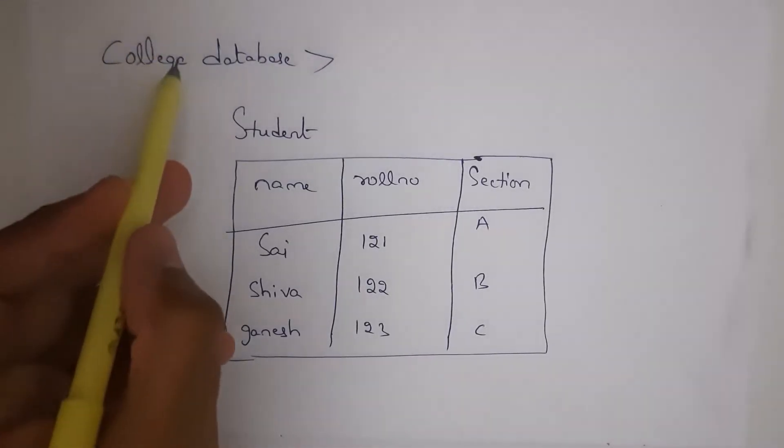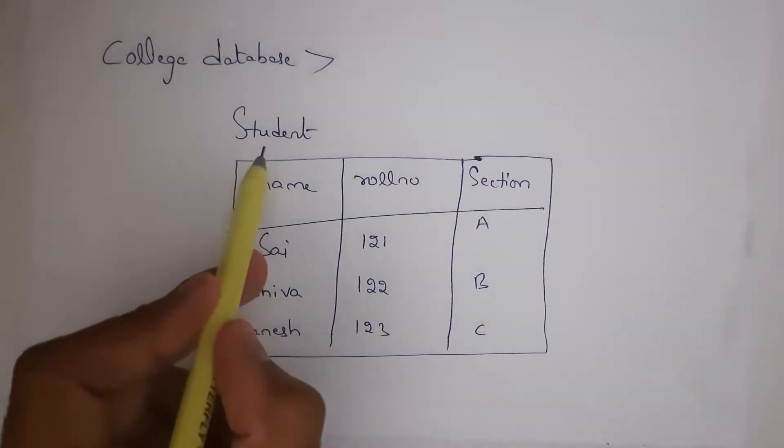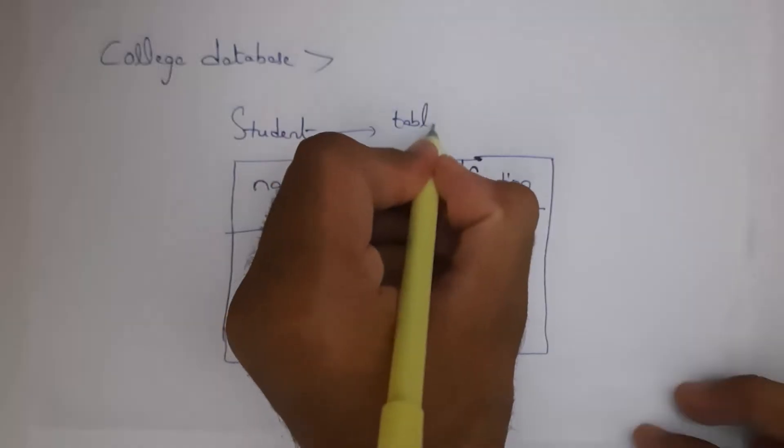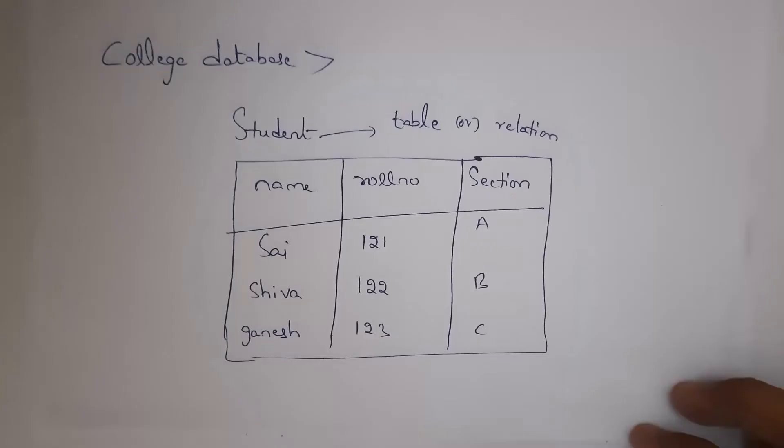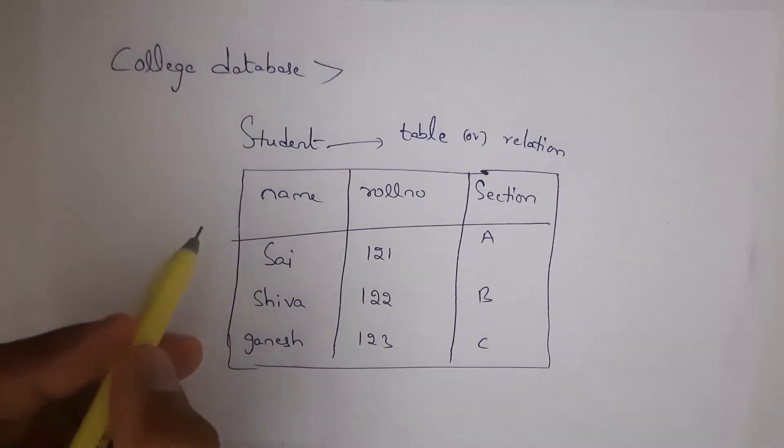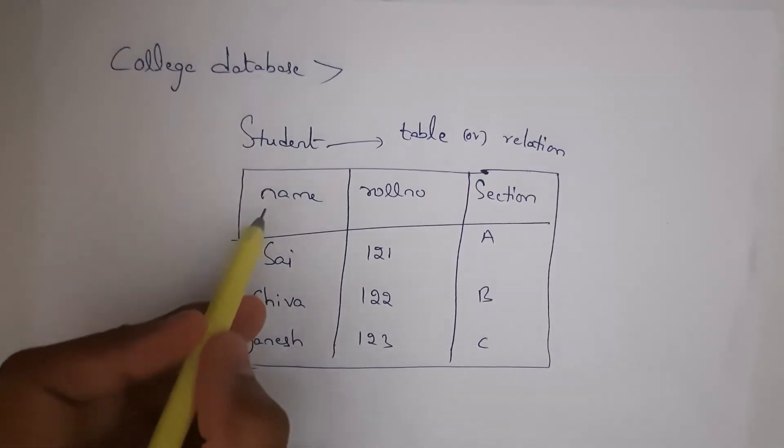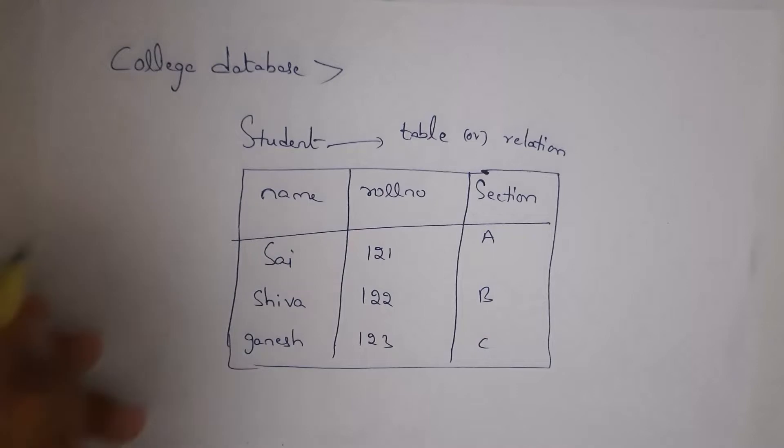For example, let us consider there is a college database. Inside college database, there is student table. We also call this student table as relation. We call it as relation because if you consider the student table, we will store only student related information like student name, student roll number and student section.